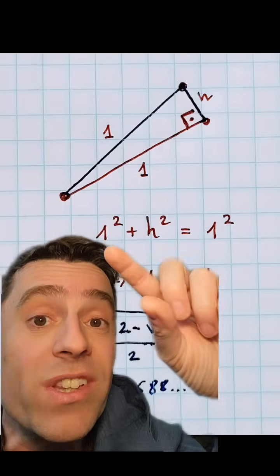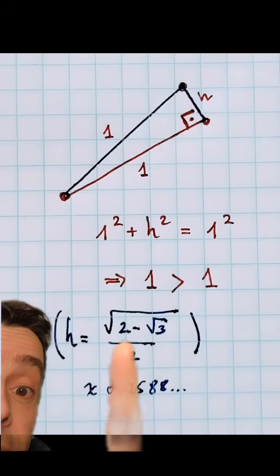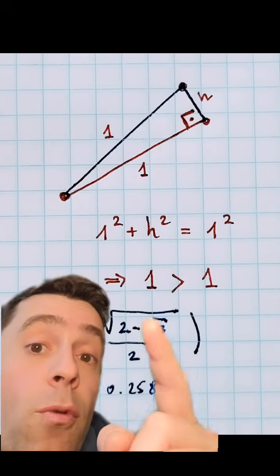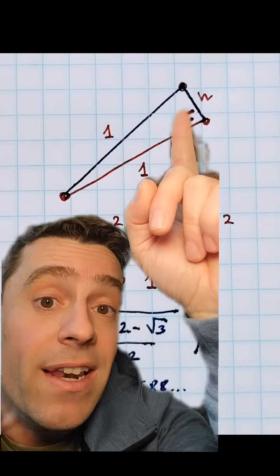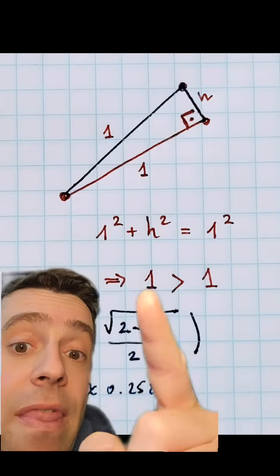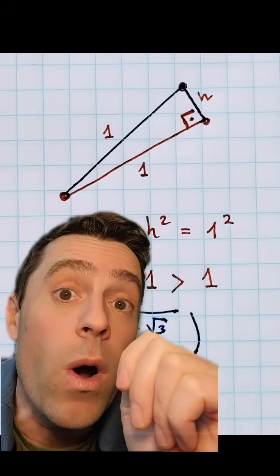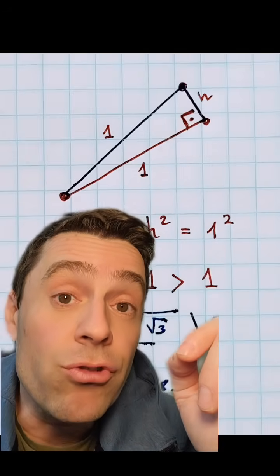But that h, that length, you can also calculate what's the side length of the dodecagon, and is the square root of 2 minus the square root of 3 divided by 2, so something like 0.25. So that length is non-zero, and that means that 1 is bigger than 1. Pretty bad contradiction.